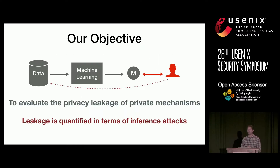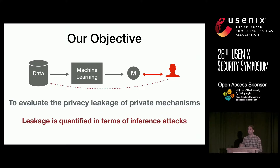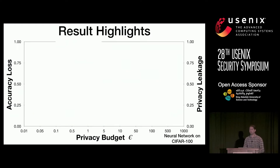We consider a scenario where the adversary has access to a machine learning model and tries to infer information about the training data. There have been many works which try to defend against these kinds of attacks. Our objective is to evaluate these attacks in terms of the privacy leakage they achieve empirically. I'll begin with the result highlights before delving deeper into the talk.